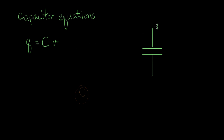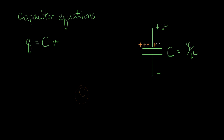Here's our capacitor. Let's say we have a voltage on it of plus or minus V, and it has a capacitance value of C — that's a property of this device. C is equal to the ratio of the charge stored in the capacitor divided by the voltage on the capacitor. What we mean by stored charge is: if a current flows into this capacitor, it can leave some excess charge on the top — I'll mark that with plus signs — and there'll be a corresponding set of minus charges on the other plate.